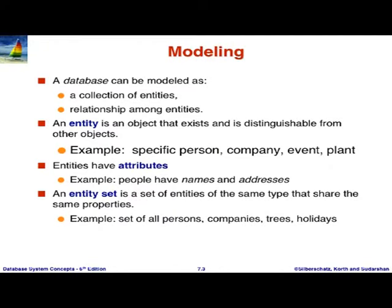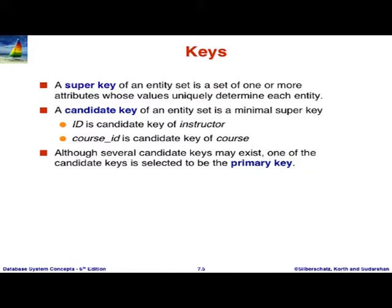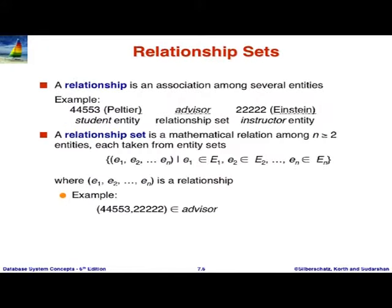An entity is something — it could be a physical thing or an abstract concept like a course. A course is not a physical thing but it is conceptually a thing. Each course is an entity, and an entity set is a set of all courses. We will use the terms entity and entity set loosely. You have some instructor set and student set. The notion of keys you are all familiar with, and then relationships and relationship sets — formally, a relationship is between a particular entity and another entity.